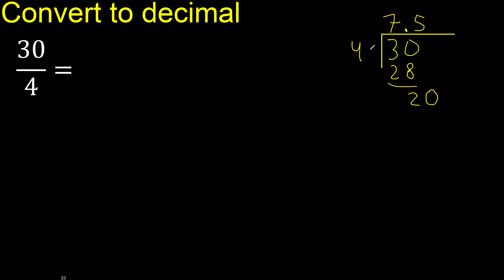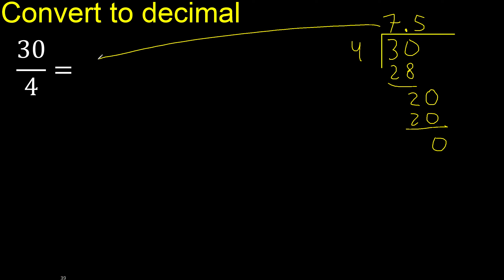4 multiplied by 5 is 20, ok, is not greater. 20 minus 20 is 0. Therefore, finish. I'll see you next time.